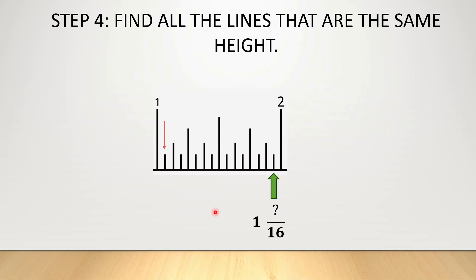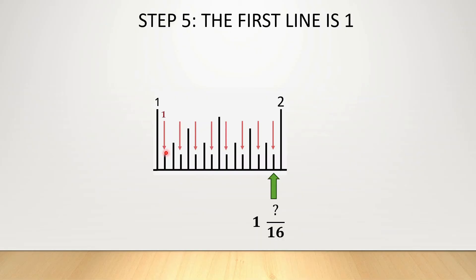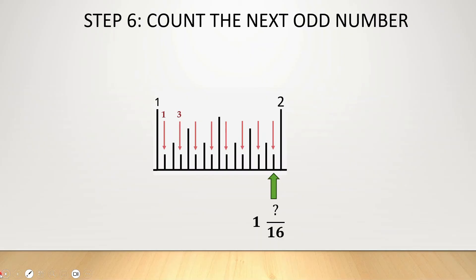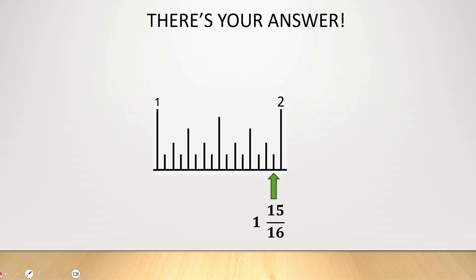Now we're going to find all the sixteenths by finding all the lines that are the same height as the one the green arrow is marking. The very first line is always 1, and from there we start counting by odd numbers: 3 over 16, 5 over 16, 7 over 16, 9 over 16, 11 over 16, 13 over 16, and finally, where the green arrow is — 15. So we write 15 where the question mark is. Our answer is 1 and 15 sixteenths.